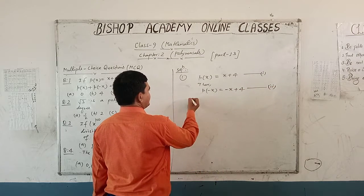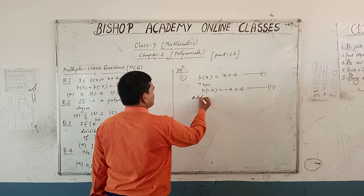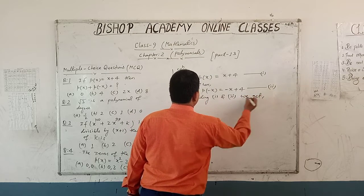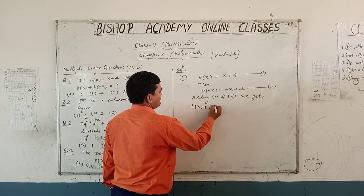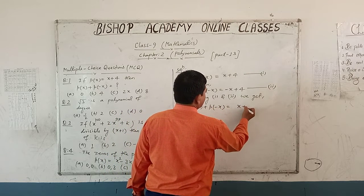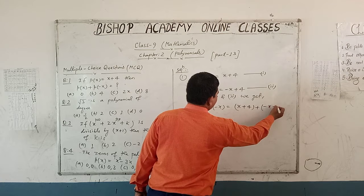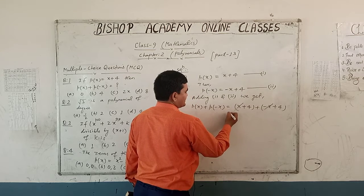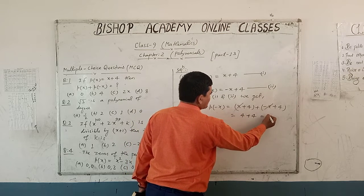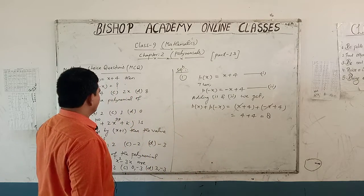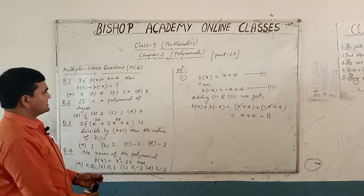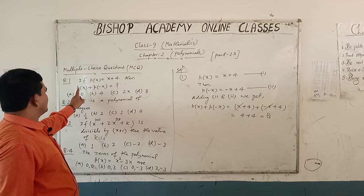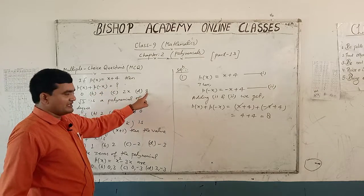Let this be equation number 2. Adding equation 1 and equation 2, we get P(x) plus P(-x) is equal to (x plus 4) plus (minus x plus 4). Here we see the value of P(x) plus P(-x) is 8.